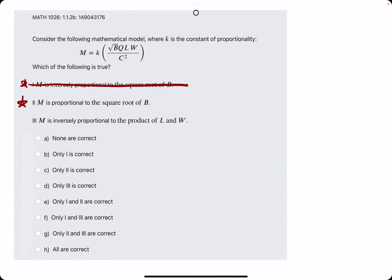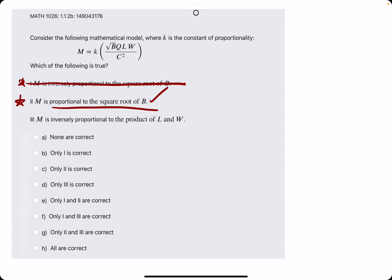Number two, M is proportional to the square root of B. Oh look, yeah, that's what we just said. So that is a true statement because the square root of B is in the numerator.